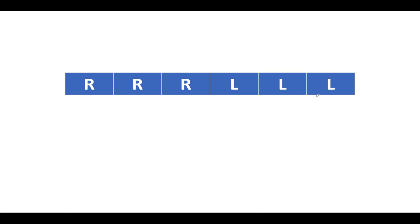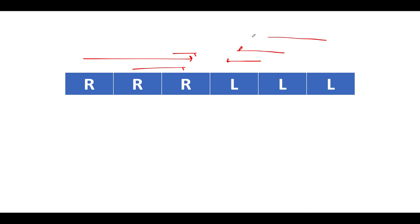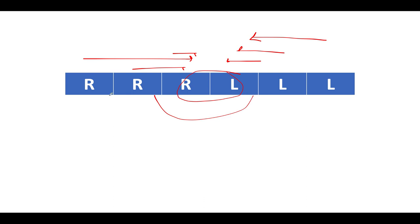Now we see three R's followed by three L's. Three are moving right and three are moving left. The total score comes out to be six — one for each pair that collides. Again, the total number of cars equals the total score of six.